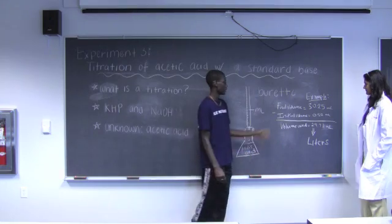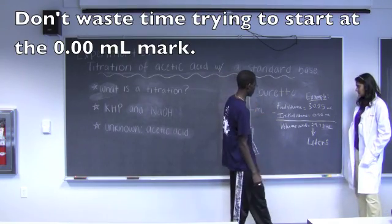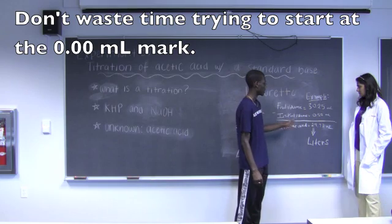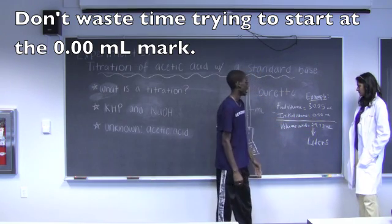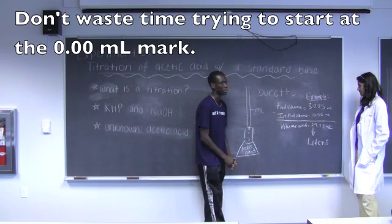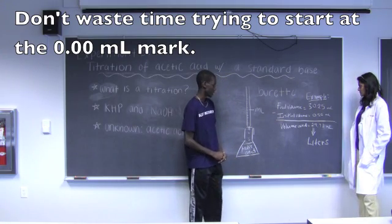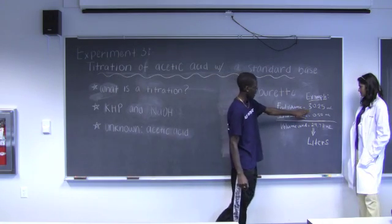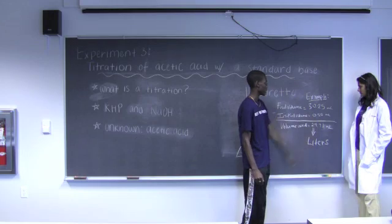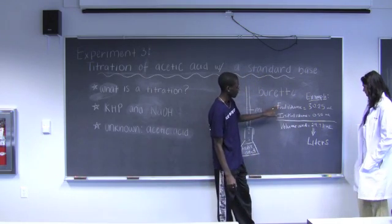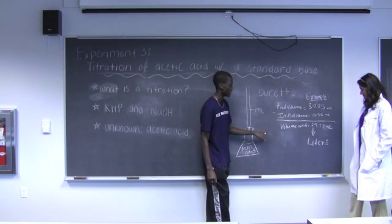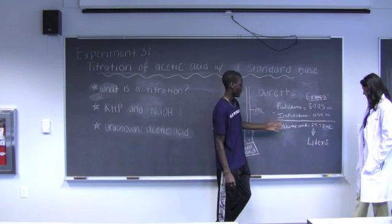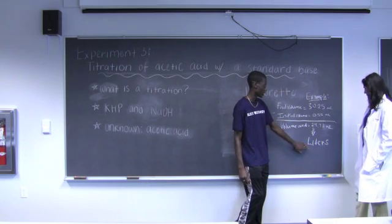For example, when using the burette, you can start out with an initial volume of 0.52. The final volume is found when the endpoint is reached, which in this case is when there's a color change in the solution. In my example, I got 30.25 milliliters. Take the final volume minus the initial volume to find the total volume used. Remember to change this from milliliters to liters.